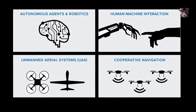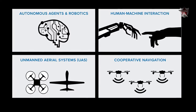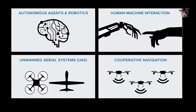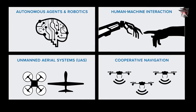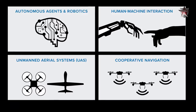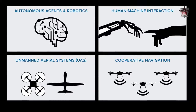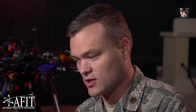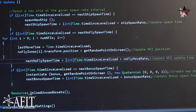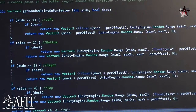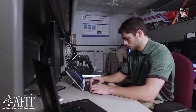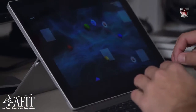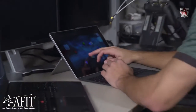As we look at this autonomy framework we're creating, it takes advantage of this fact that autonomy is not necessarily a cut-and-dry definition. How can we apply machine learning algorithms to unmanned aerial systems? How does the operator interact with that in the human-machine teaming aspect?